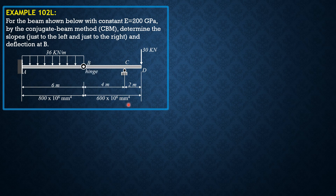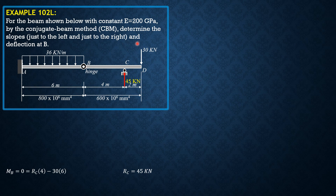Here is the given figure. The simply supported portion of the beam segment is B, C, D. Let's consider beam BCD first. Assuming reaction at C as upward and summing moments about B equals 0: R_C times 4 minus 30 times 6 equals 0, giving R_C equal to 45 kilonewtons. Since R_C is 45 kN and we have 30 kN applied, the shear just to the right of B is 15 kilonewtons downward.